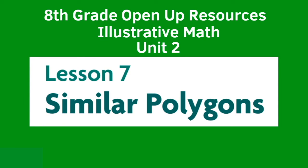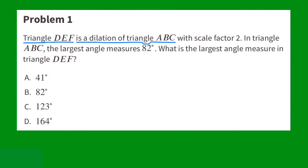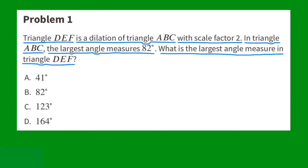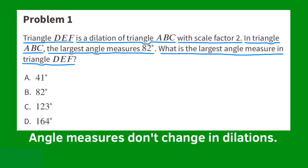Eighth grade Open Up Resources, Illustrative Math, Unit 2, Lesson 7: Similar Polygons. Problem number 1. Triangle DEF is a dilation of triangle ABC with scale factor 2. In triangle ABC, the largest angle measures 82 degrees. What is the largest angle measure in triangle DEF? Angle measures don't change in dilations. Since the largest angle was 82 degrees in triangle ABC, the largest angle of the dilation will also be 82 degrees.